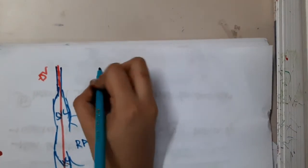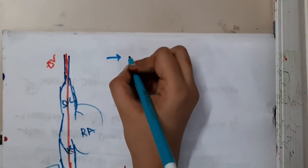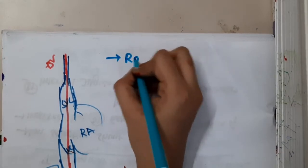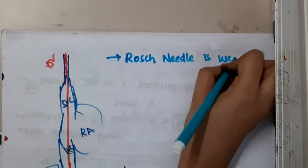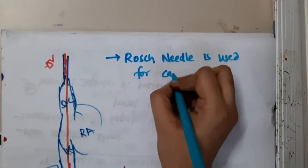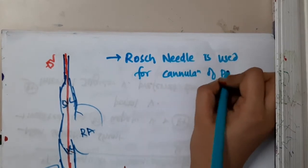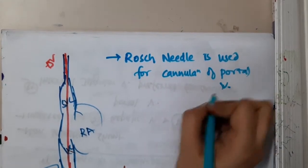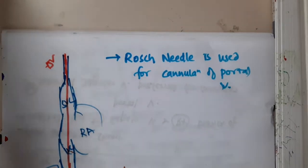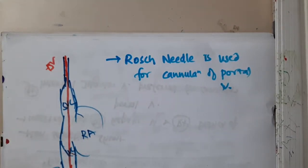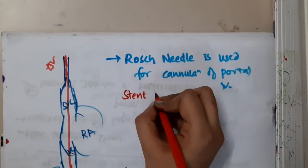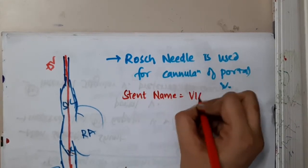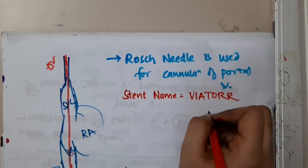This is called the transjugular intrahepatic portosystemic shunt. The needle used for this cannulation is the Rashkind needle, which is used for cannulation of the portal vein. The name of the stent used here is the Viatorr stent.